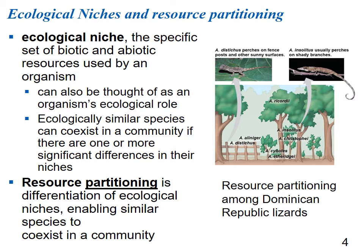An ecological niche can also be thought of as an organism's ecological role or how it makes its living. Ecologically similar species can coexist if there are significant differences in their niche. This leads to resource partitioning — the differentiation of ecological niches that enables similar species to coexist. For example, Dominican Republic lizards are similar species but use different parts of the environment: some are found on fence posts and sunny surfaces, others on shady branches or different layers of the habitat.